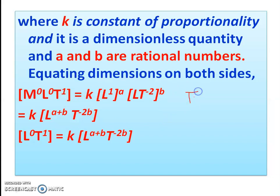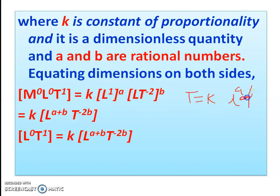So the formula is: T is equal to k into L raised to a times g raised to b. We now need to find the dimensions of each quantity. We consider the dimension of acceleration due to gravity g.